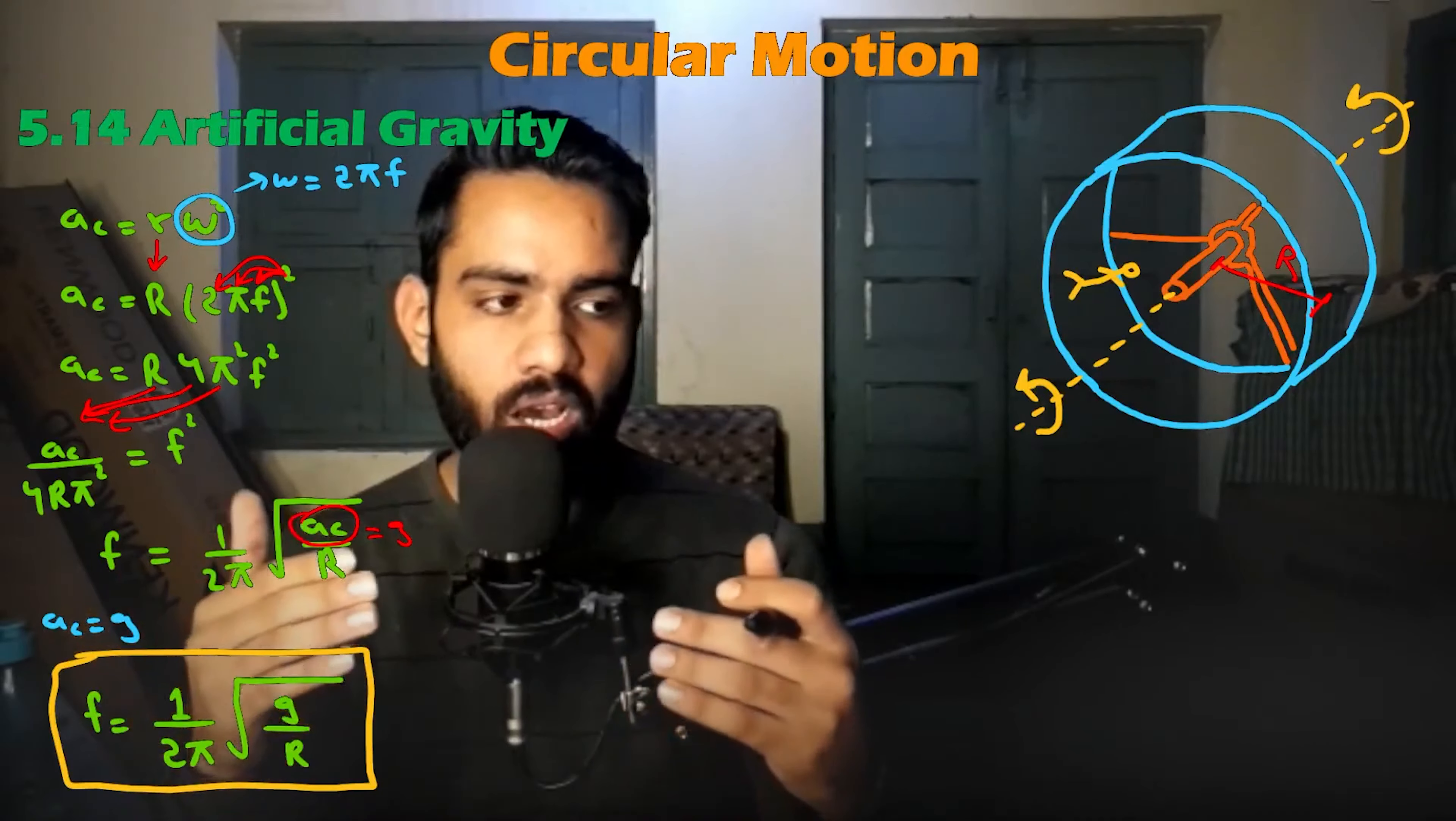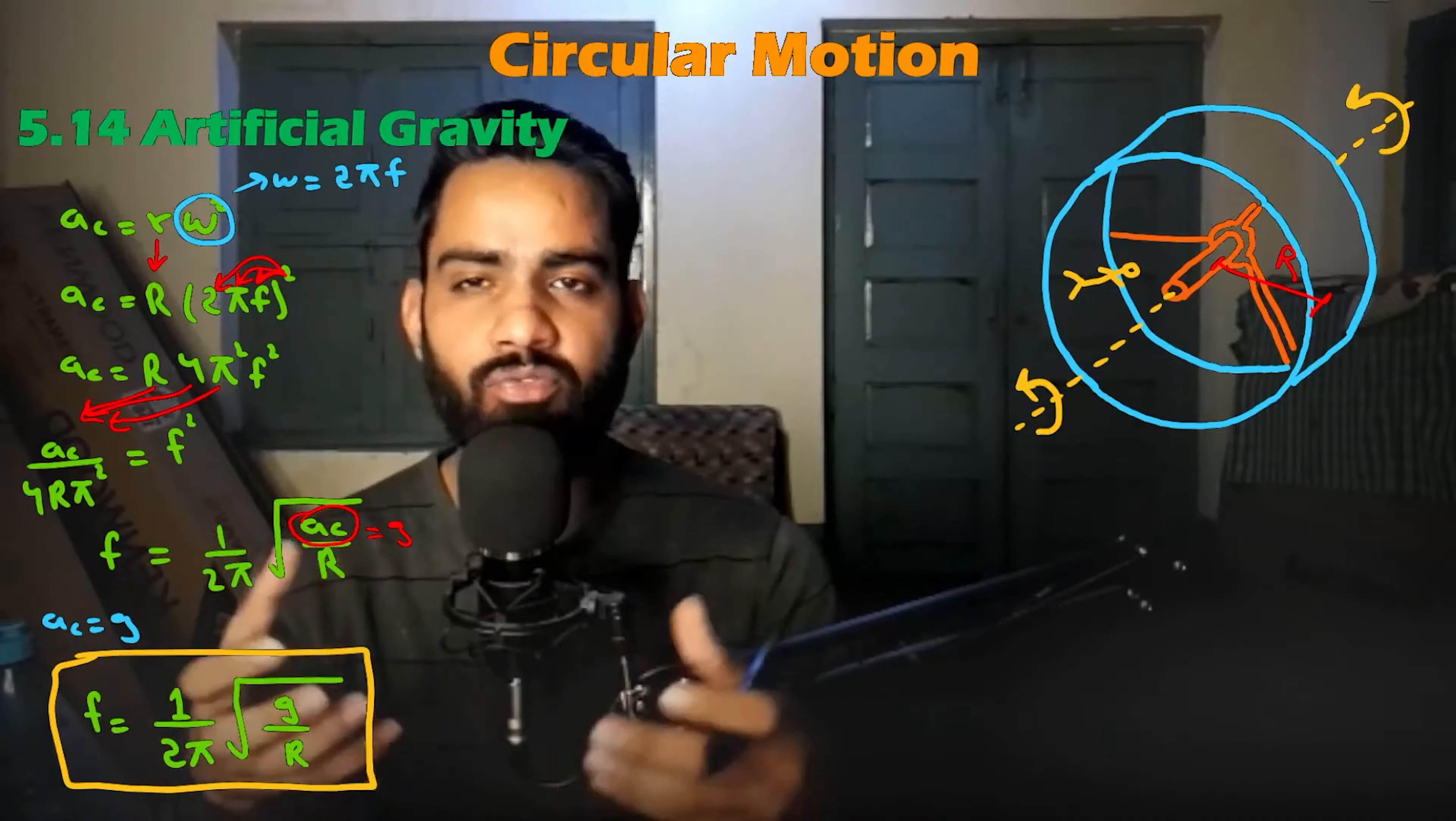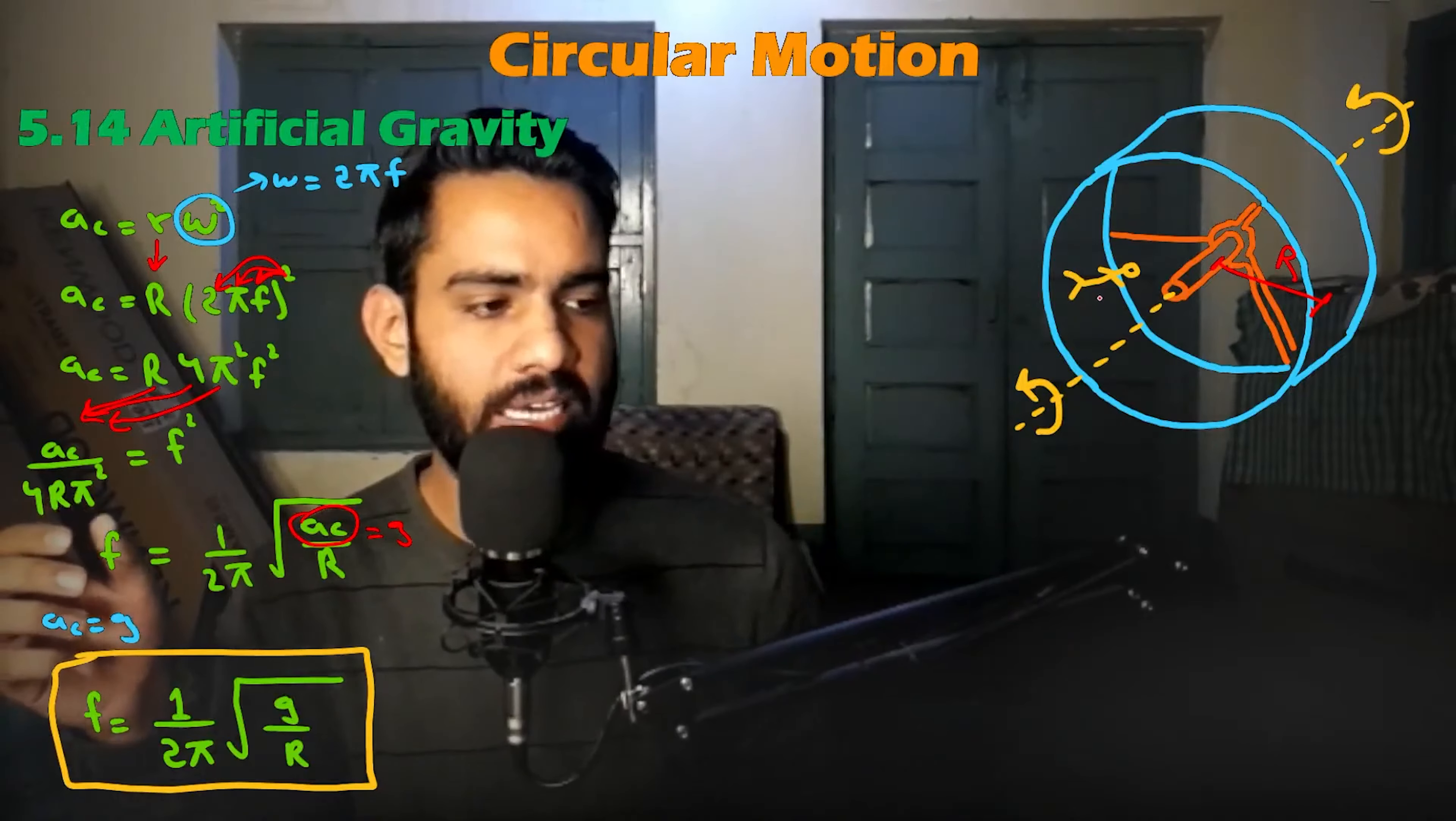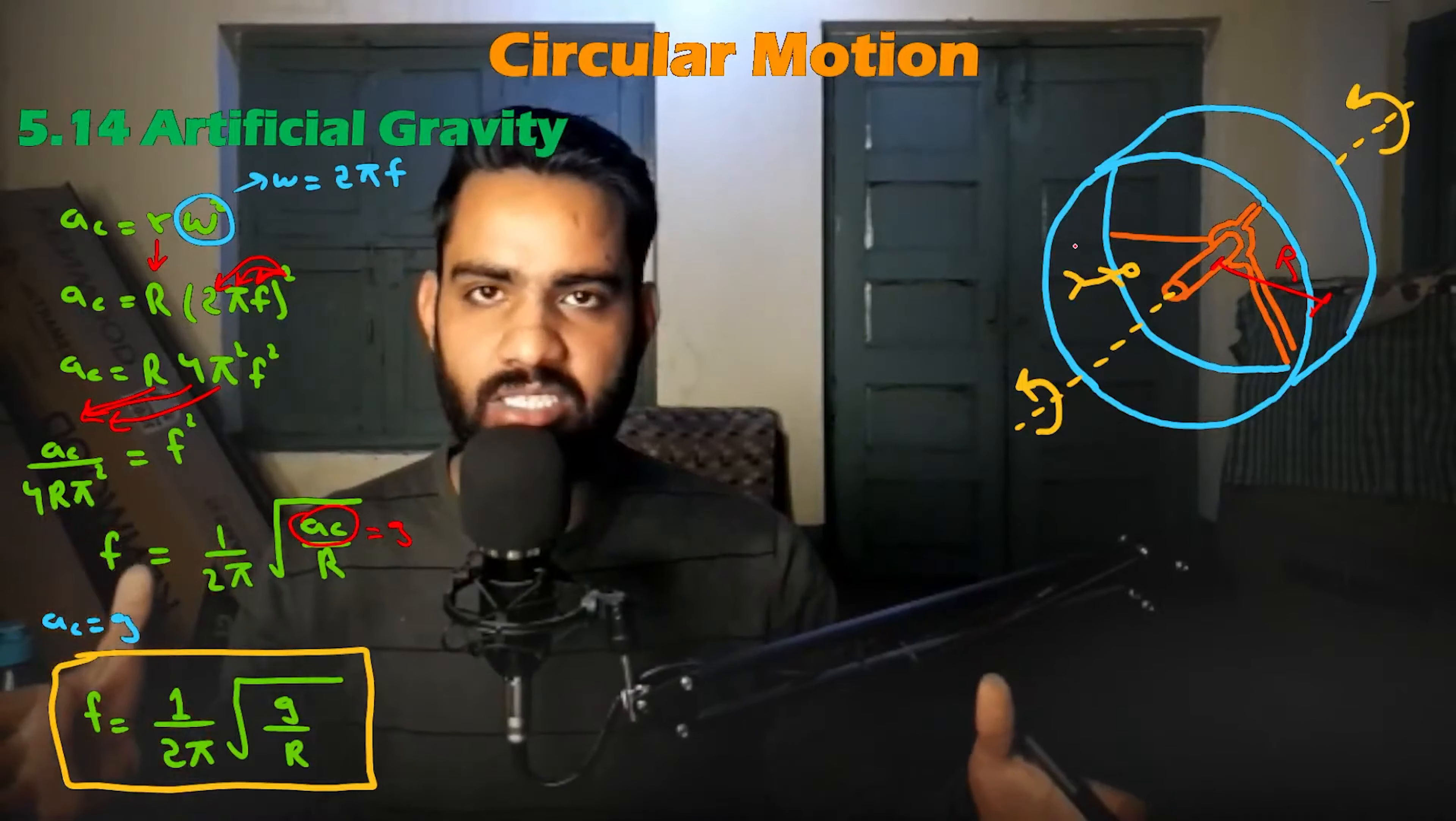In space there will be crystals in 0G. Then we want to see how crystals form at half-g. So we have a small device which will rotate, exactly the same principle, with crystals inside.